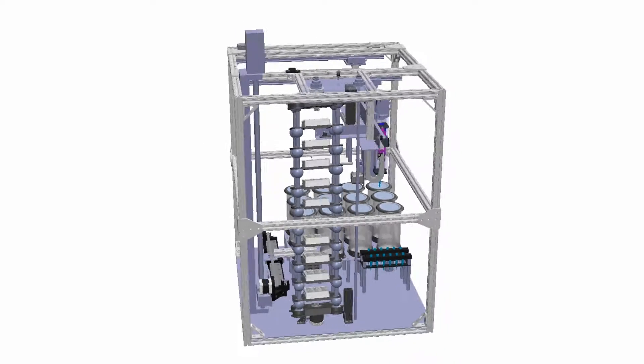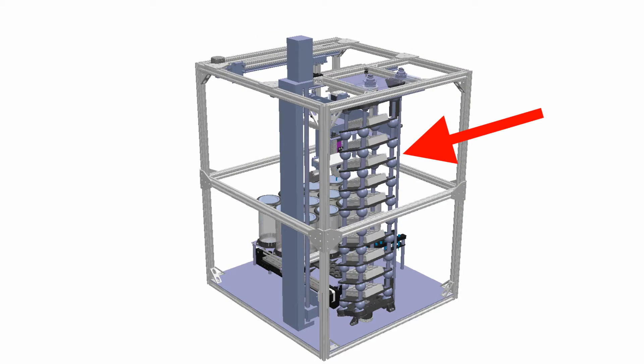Let's look at the different subsystems. The nutating tower contains 10 well plates with 12 experiments each, for a total of 120 simultaneous experiments. It keeps 9 of the 10 well plates agitated while the 10th is being processed.